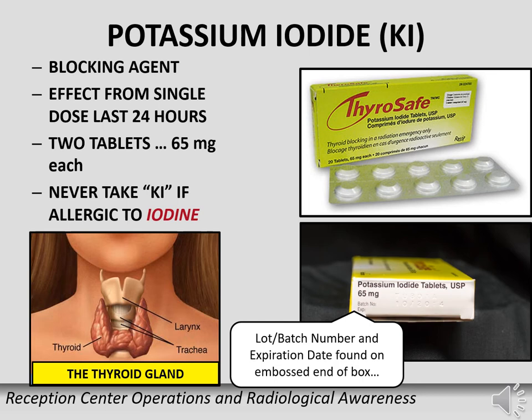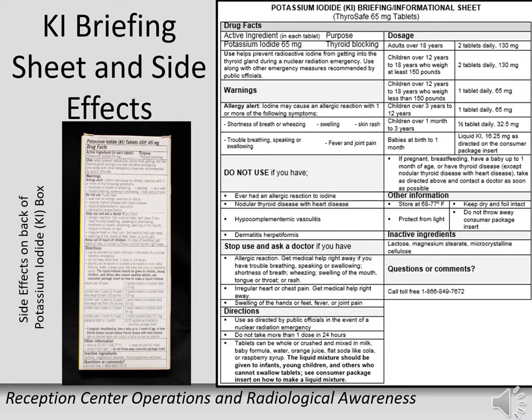Potassium iodide, or KI, is used to block the uptake of radioactive iodine to the thyroid gland. If ingested early in a radioactive iodine release, the dose to the thyroid gland will be reduced, lowering the chance of thyroid cancer later in life. Each adult would take two tablets a day for 10 days, or as directed by the state or county health director, but you must have permission to take KI. Although KI is an over-the-counter drug, be aware of side effects and never take it if you have a known allergy to iodide. KI administration is voluntary. Possible side effects include a mild rash or a metallic taste in the back of your throat.